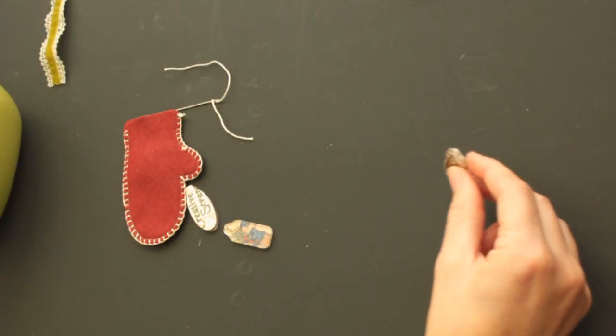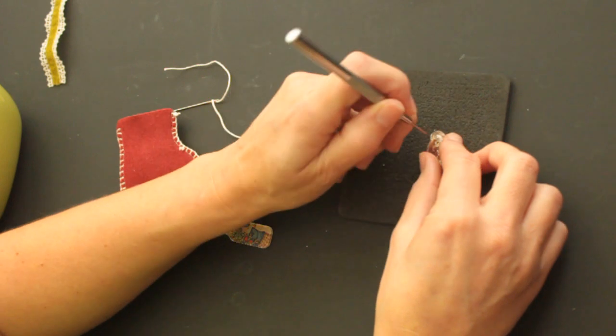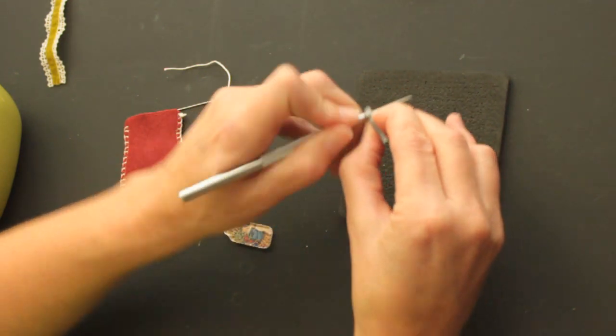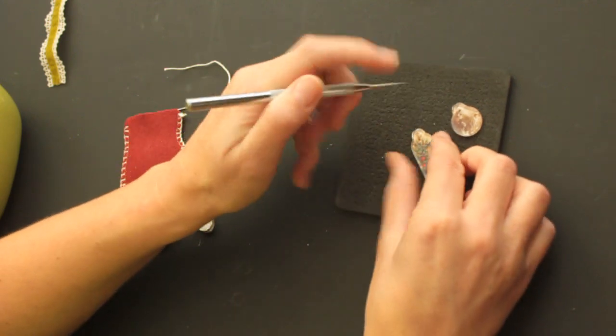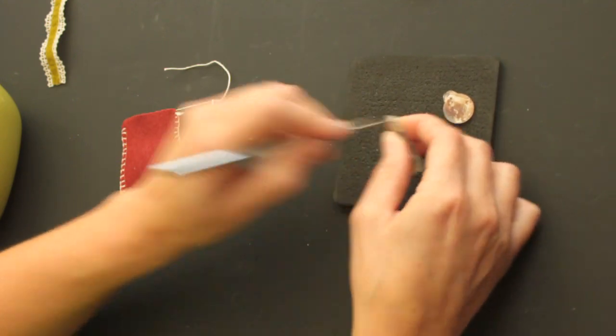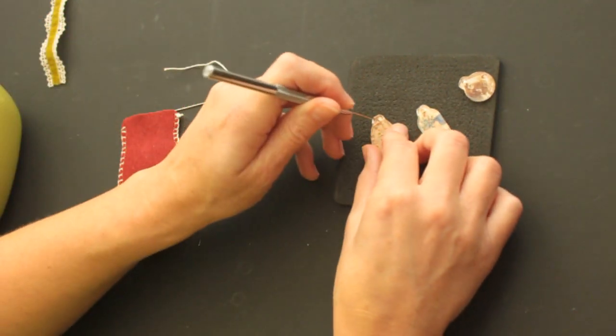Next we'll need a foam board and a paper piercer and just pierce a hole on the top of your fragment piece, so we'll be able to string up the ornaments.